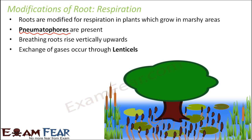These breathing roots grow vertically upwards. One example of such plants where pneumatophores are present is mangrove, also known as Sada Bahar in India. In mangrove plants, these breathing roots rise vertically upwards and come out of the water like conical spikes — you can see these brown spike-like structures coming out of the water.